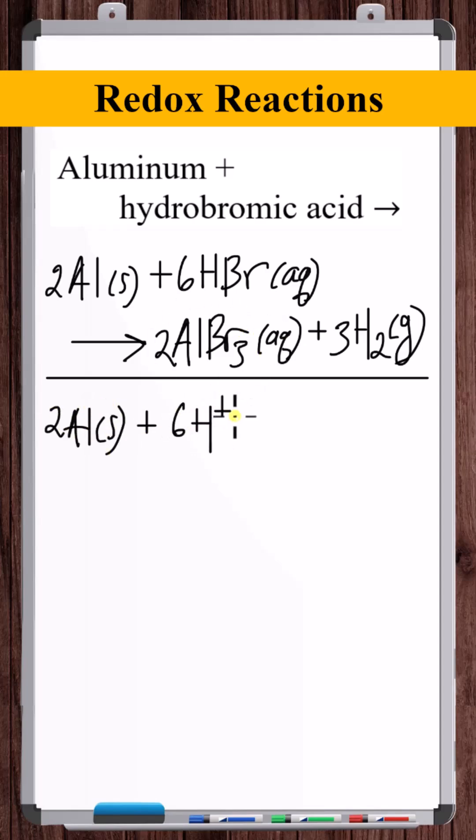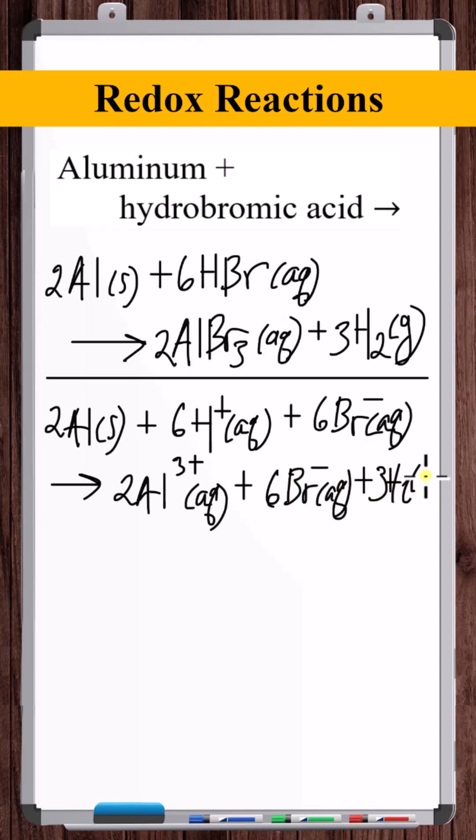So we've got 6H plus aqueous, 6Br minus aqueous, 2Al3 plus, then 6Br minuses, and then hydrogen gas. So there's the ionic equation.